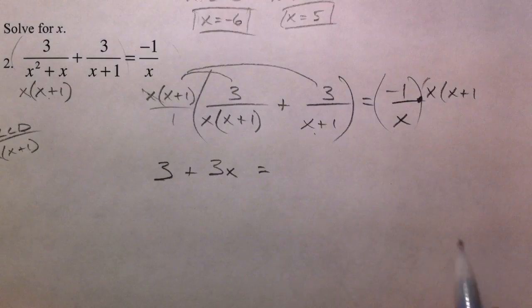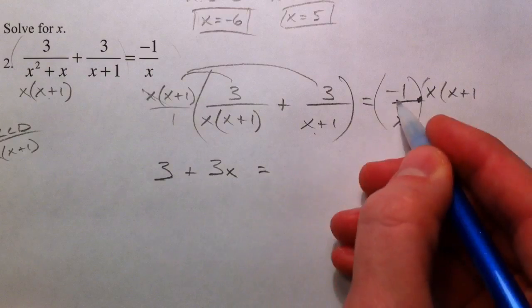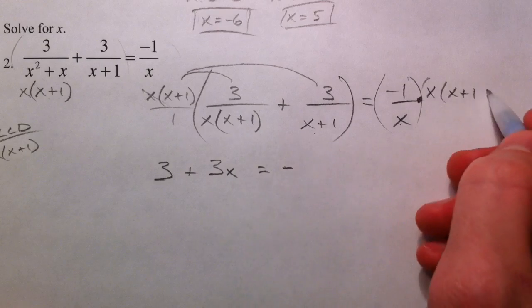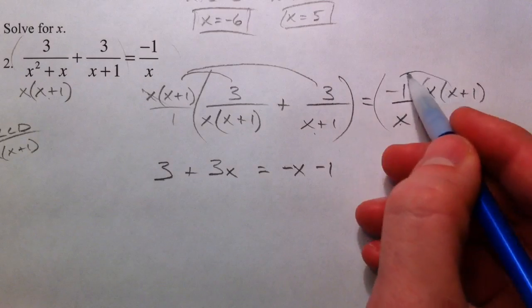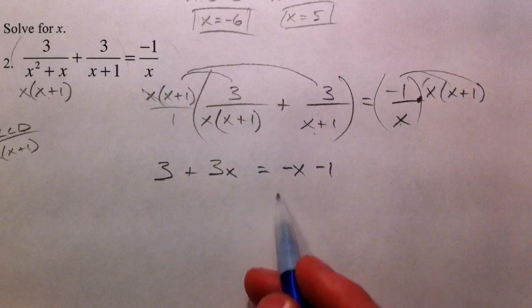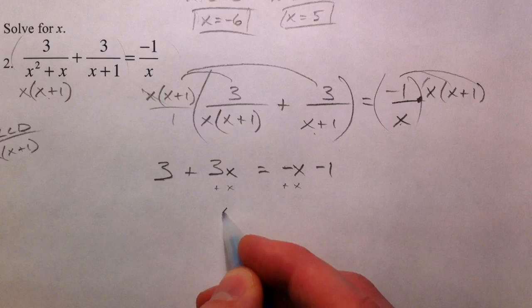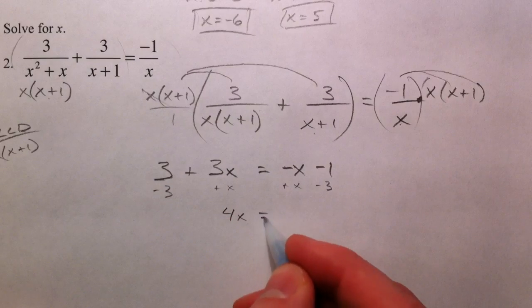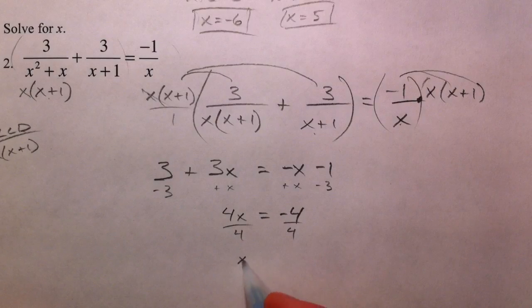So that's negative 1 times that, so you want to distribute that negative: negative x minus 1. I'm going to add the x, you get 4x. I'm going to subtract the 3, you get negative 4. Divide by the 4 to get the x by itself, and x equals negative 1.